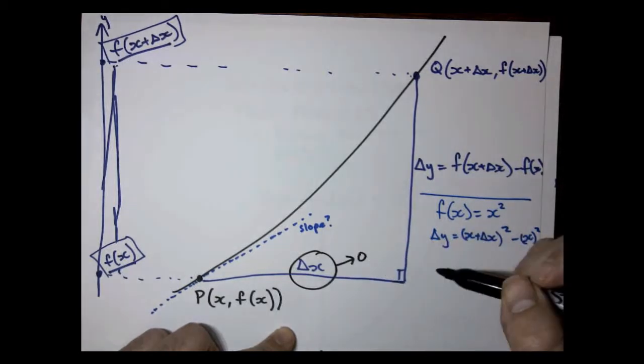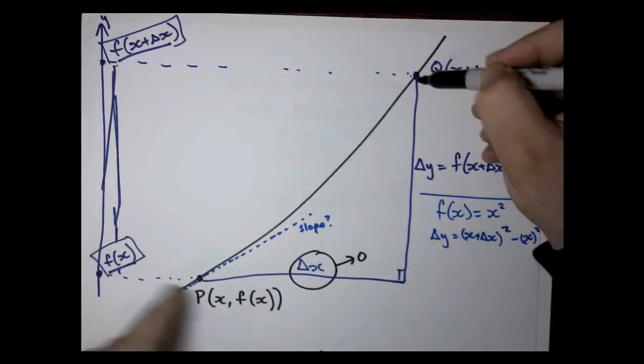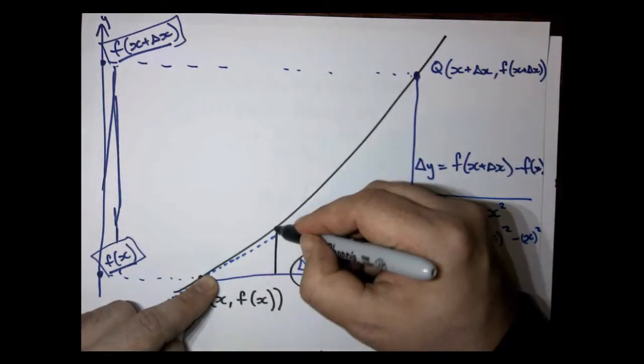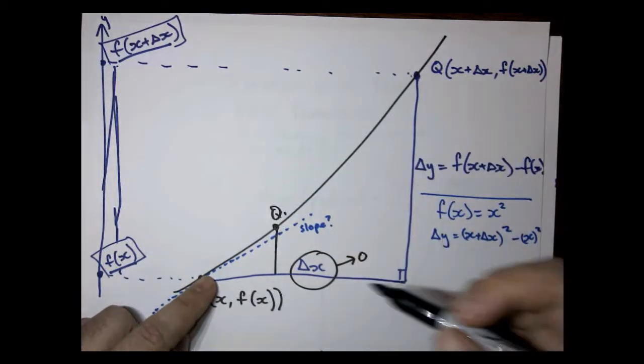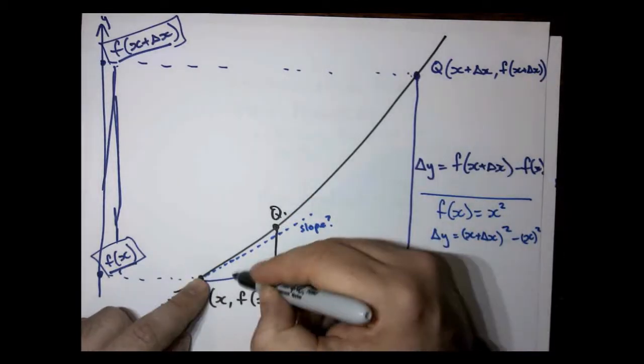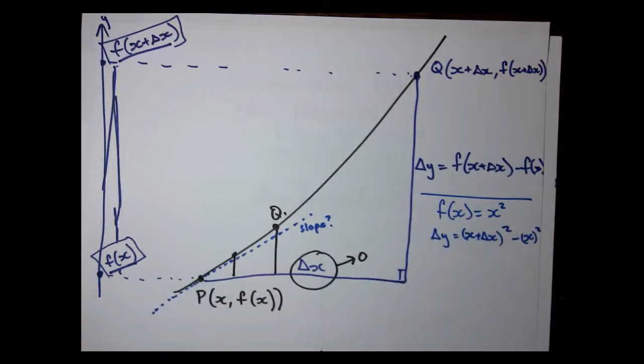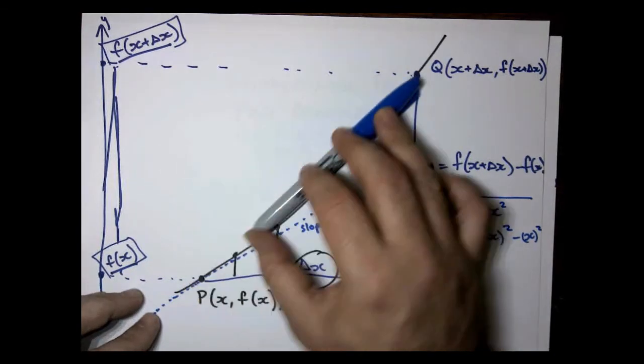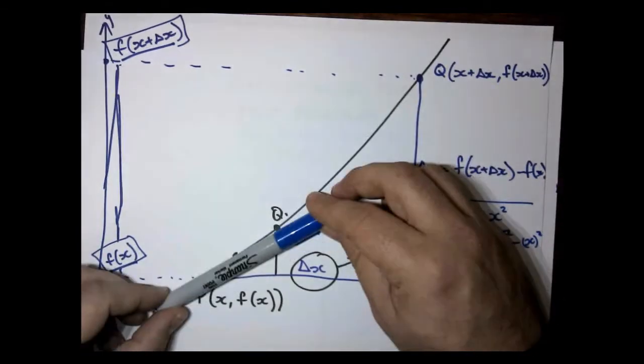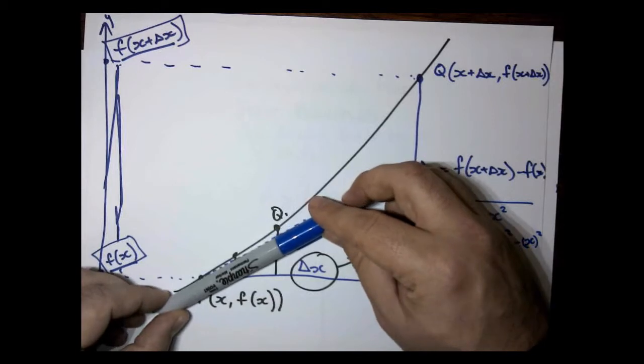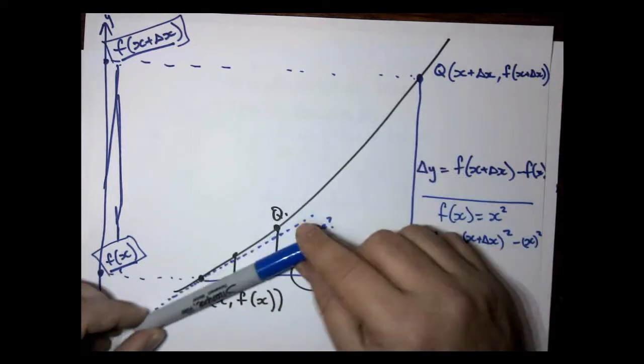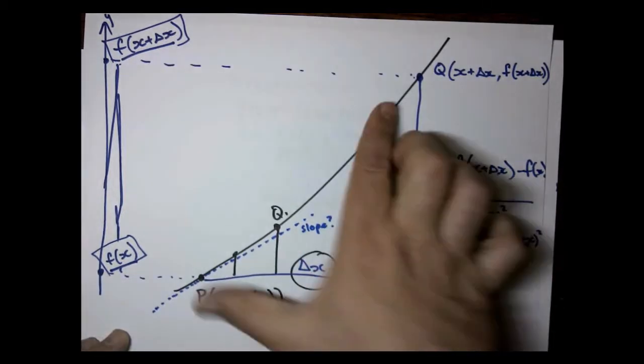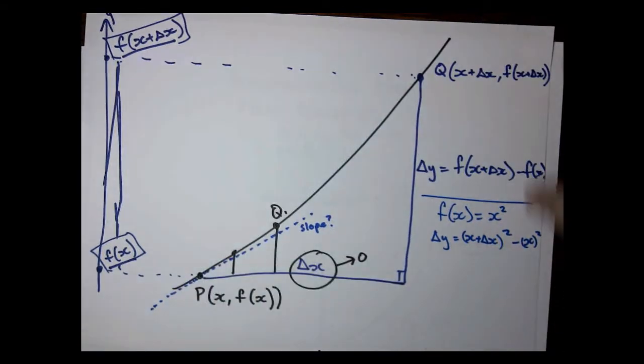And you can imagine that as we let this gap shrink, our little triangle shrinks with it. Here's our new Q. And as it shrinks, you can imagine our slope. Our first slope looks like this, then our next slope looks like that. And you notice it's getting closer and closer to this tangent slope that we want. So if we let this approach zero, we're going to get a really good, reasonable answer for the slope at that point.